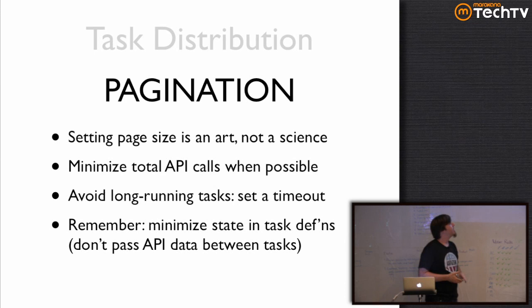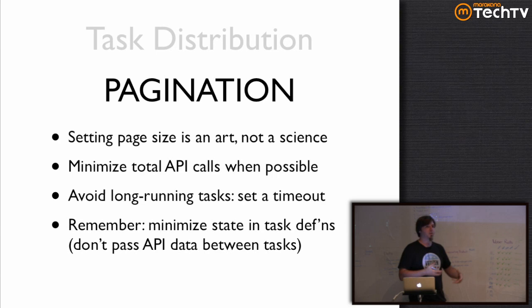You want to set a timeout on your task. Celery gives you a way to set a soft timeout and a hard timeout so that you can make sure you know when you have long-running tasks, go fix that, and it becomes a problem you know about and can solve.